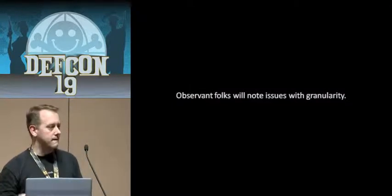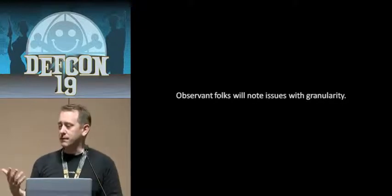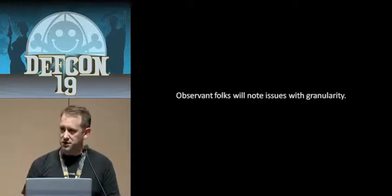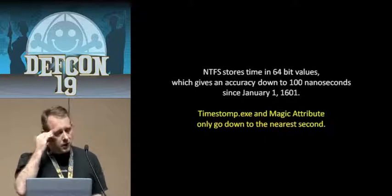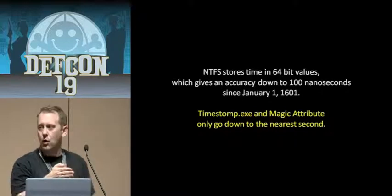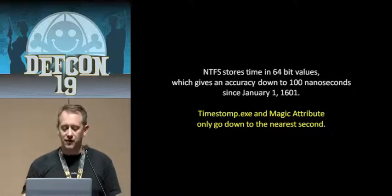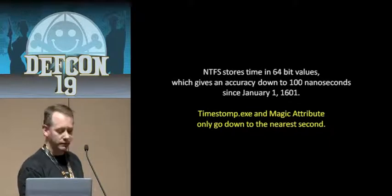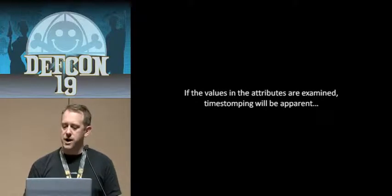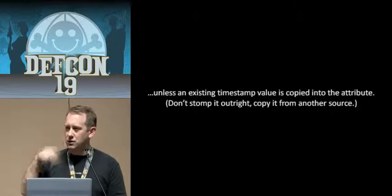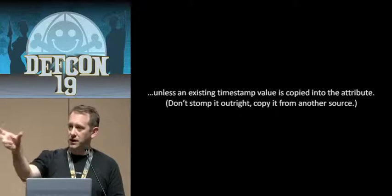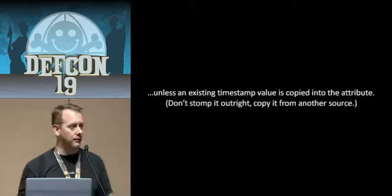Timestamps on Windows-based systems are stored in 64-bit values covering time elapsed since January 1st, 1601, in 100-nanosecond increments. Timestomp.exe, Attribute Magic, and the other tools you can download from the net only go down to the nearest second. So if they only go to the nearest second and you break open a hex editor, you're going to notice that someone did time-stomping. What would be better is copying the whole 64-bit value from another file.